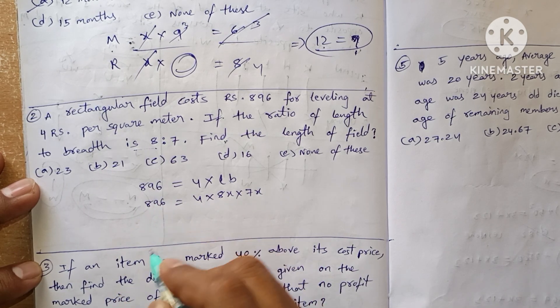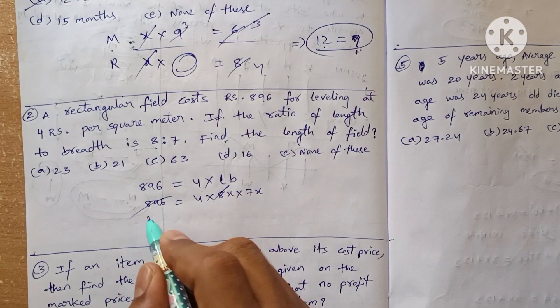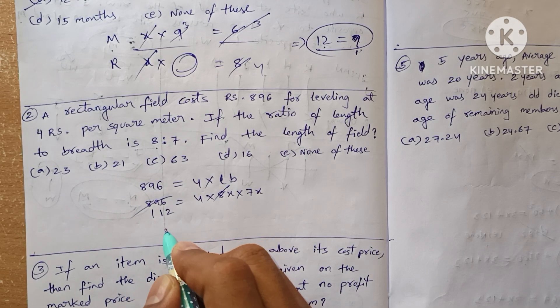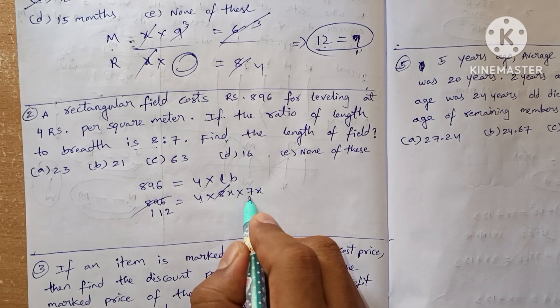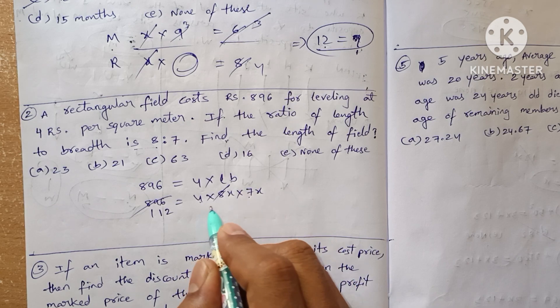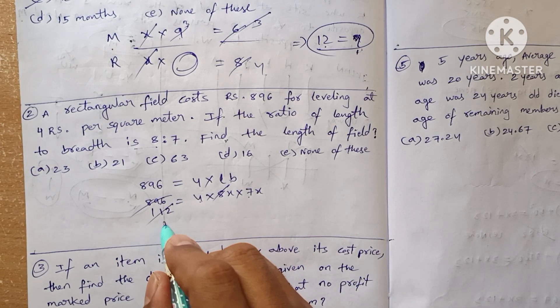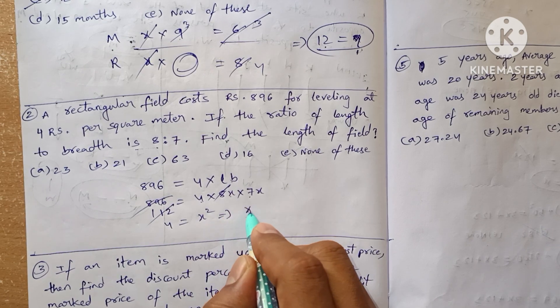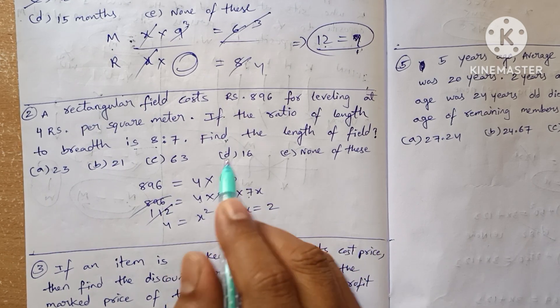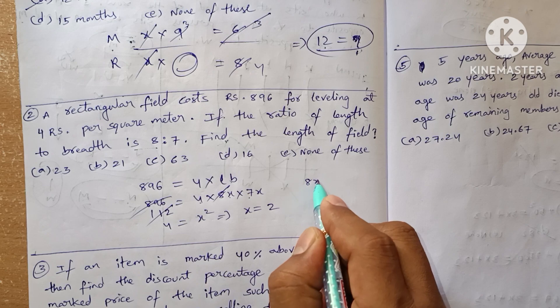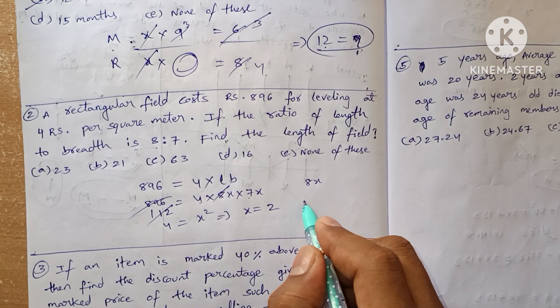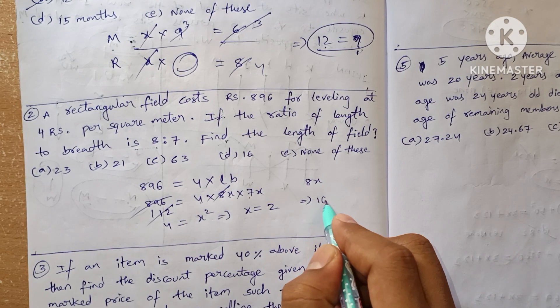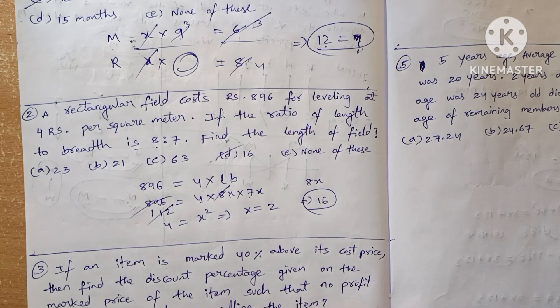So it is 8x and this is 7x. 8x × 7x × 4 equals 896. 8 × 7 × 4 is 224, which gives us x² = 4, so x equals 2. We need to find the length of the field. Length is 8x, so it is 8 × 2 = 16. So our answer is 16, option B.